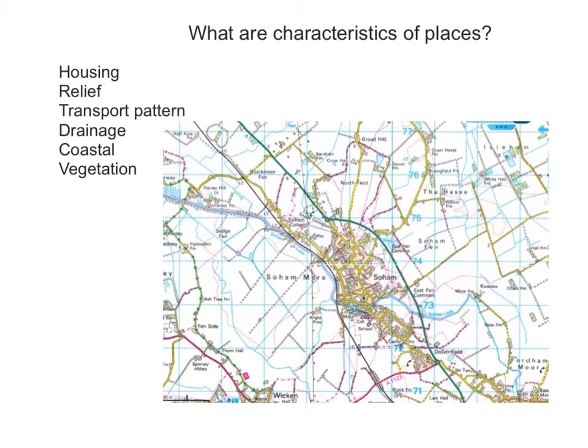The vegetation shows very few woodland areas here. Again, the number of farms here indicates that there is probably crops growing. And the transport pattern from Soham, again, is probably in a radial pattern outwards. Finally, the lack of contour lines — there are just a couple — indicates that the land is flat in terms of its relief.